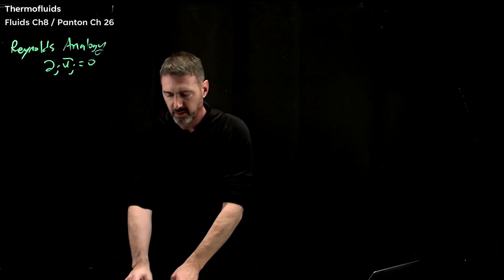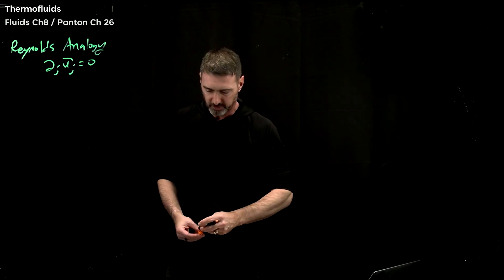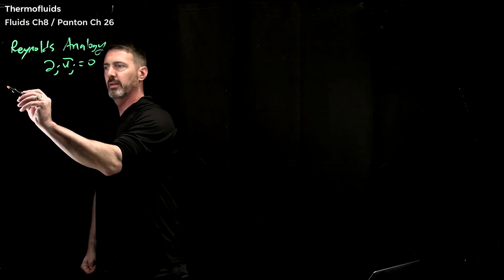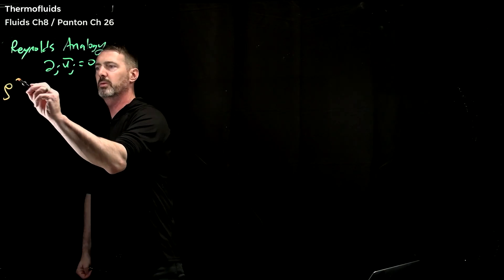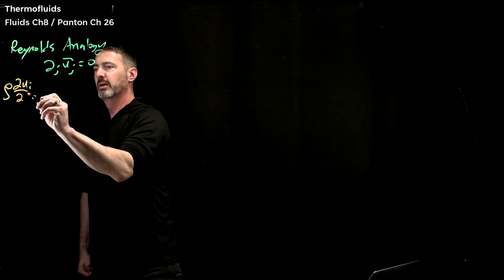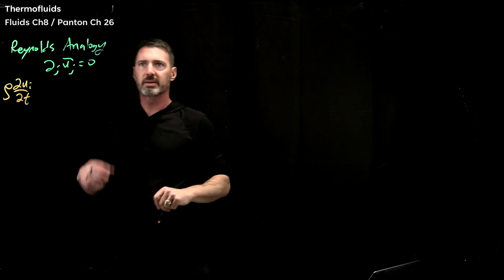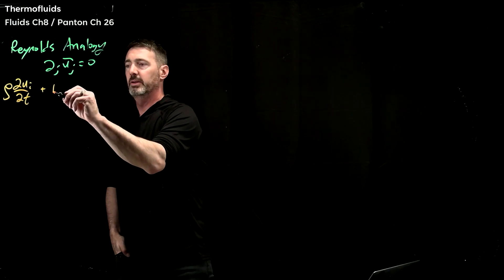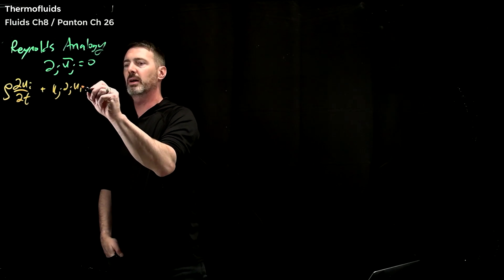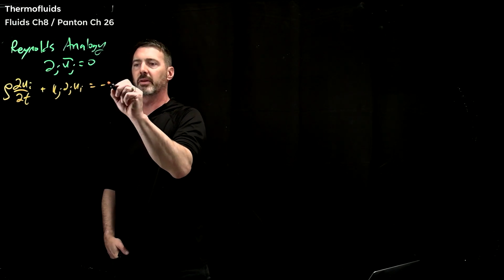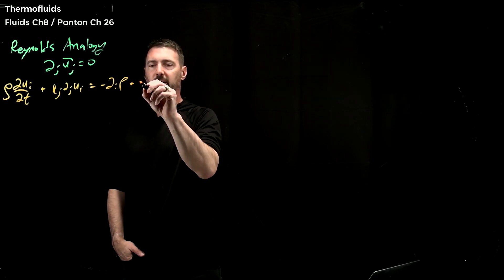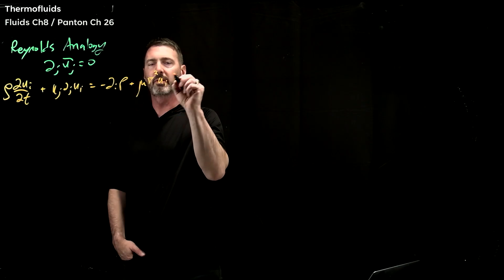But the harder one is the momentum equation. We'll stick to this: rho times the time rate of change of the i-th velocity, and then uj del_j ui, and that's equal to the negative gradient of pressure, plus viscosity times del-squared ui.